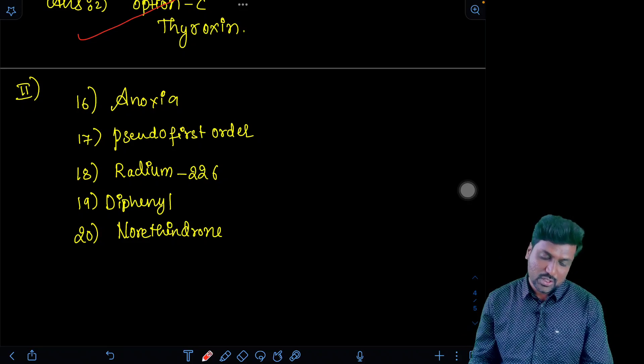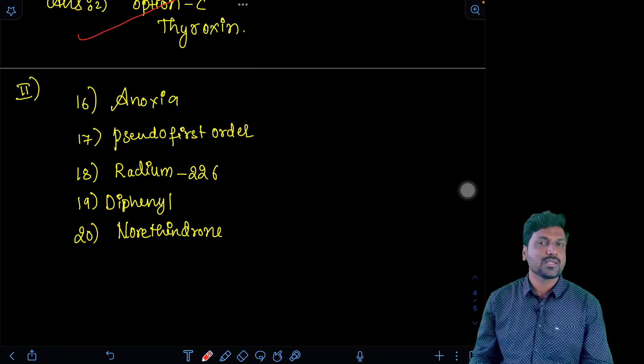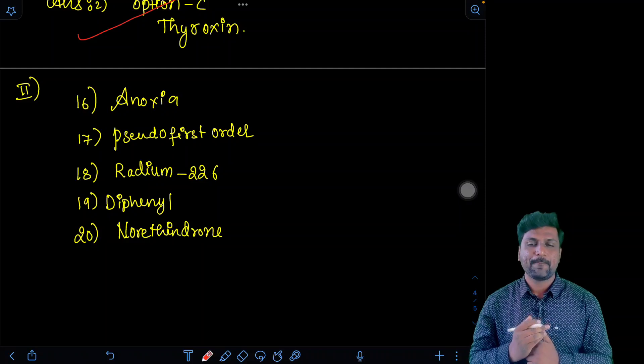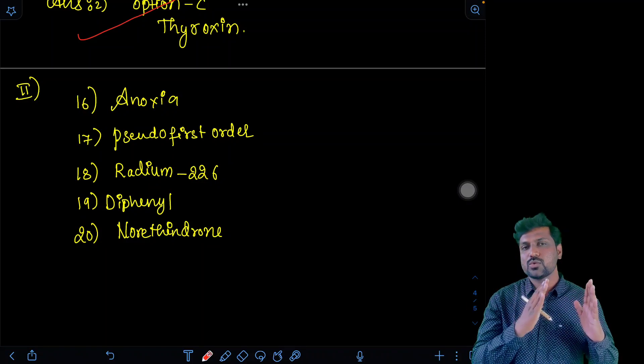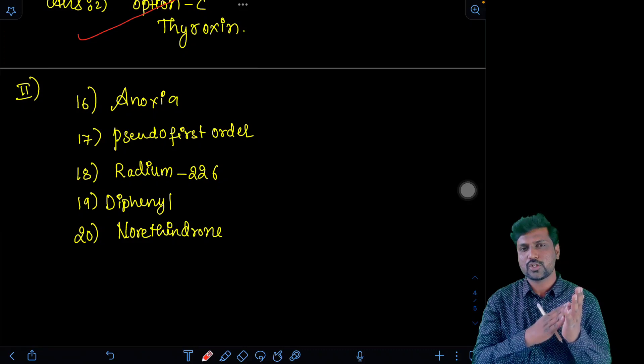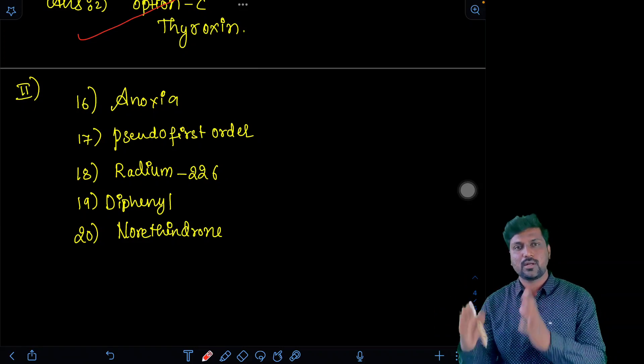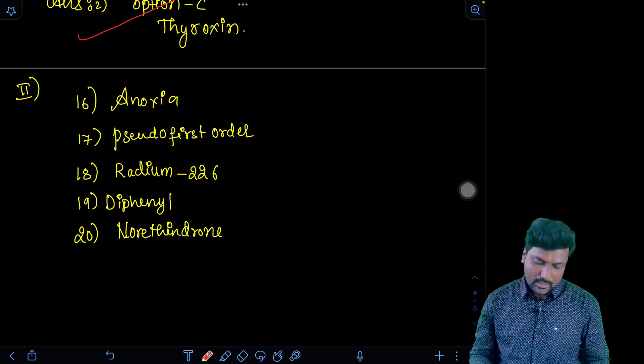Second question, that is question 17. Inversion of cane sugar is an example of pseudo first order reaction where the rate of the reaction depends only on the concentration of sucrose but not on the water because water concentration is higher.